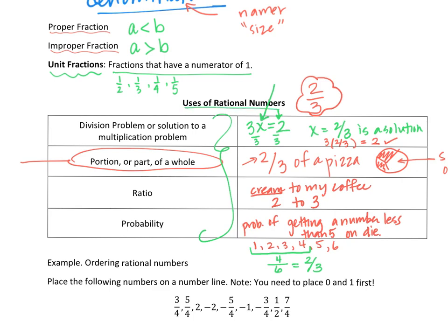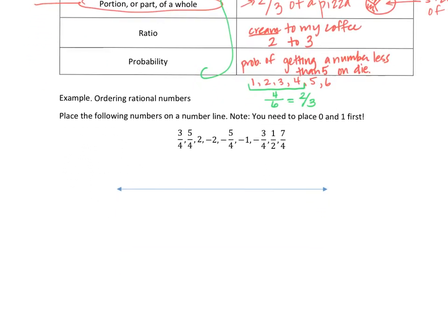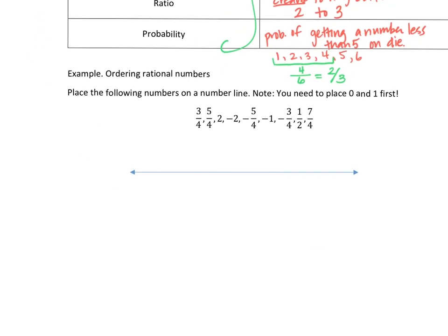Next, we want to order numbers by placing them on a number line. It's really important when talking about parts of a whole to place zero and one first. I'll put zero in the middle as a standard reference point, then leave room for one. Looking at the fractions, some are negative, so I'll include some negative values as well.